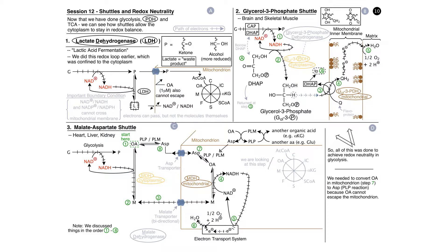Back in lectures three and four, I said that there were three ways to convert NADH back to NAD+. These were alcoholic fermentation in anaerobic cells, homolactic fermentation — again, in an anaerobic environment — and the third is respiration, which occurs in the presence of oxygen. I'm going to loop back now and revisit this topic. I want to spotlight three general strategies that cells use to achieve redox neutrality in the cytoplasm. The first is lactate dehydrogenase, the second is the glycerol-3-phosphate shuttle, and the third is the malate-aspartate shuttle.